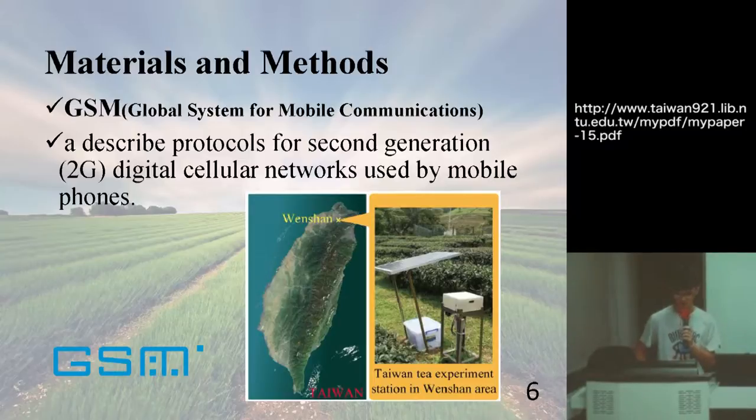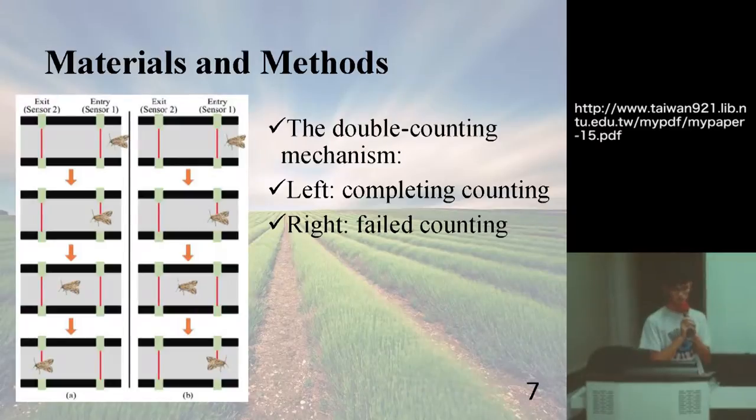And this is the way that the system counts the bug. At the left side, if we just use one sensor, we don't know if that bug is going into the box or go out from the box. So we use two sensors. By the left side, the bug will touch sensor one first and touch sensor two second, so we will know that it is going into the box. And if the bug goes inside and goes outside, by the right side, then the system won't count this count.